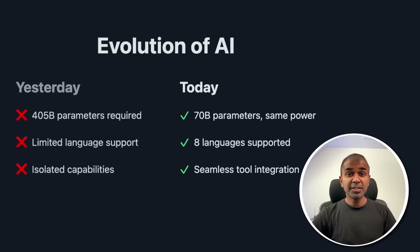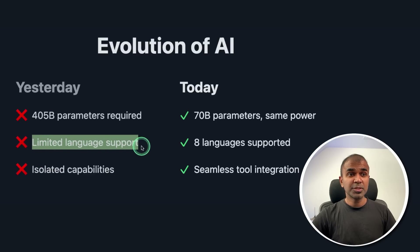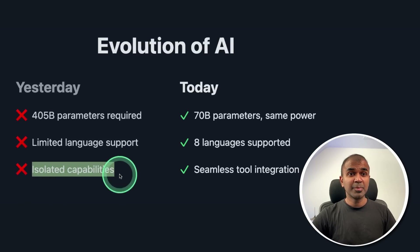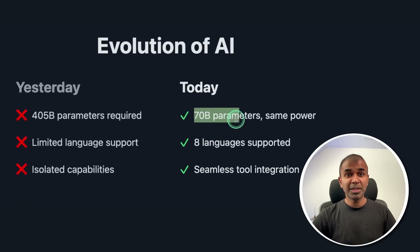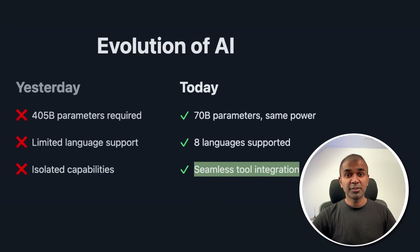Previously, to get this level of performance, you needed a 405 billion parameter model with limited language support and isolated capabilities. Now we have 70 billion with the same power, 8 languages, and seamless tool integration.